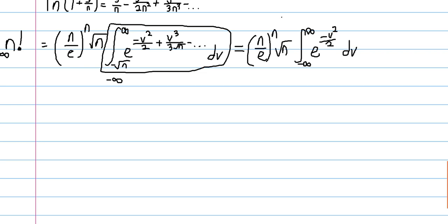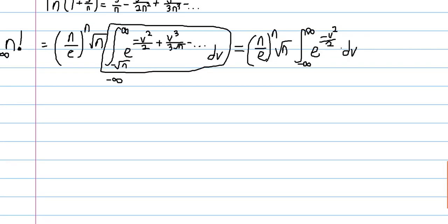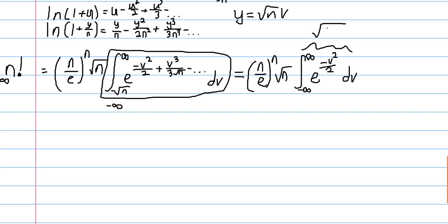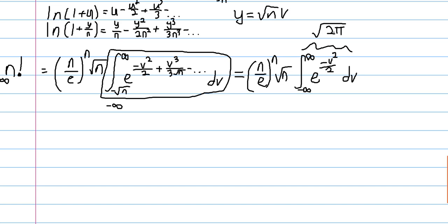And so, disregarding all the constant stuff, we get this integral, which is now independent of n. And we see this highly resembles the Gaussian integral. And if you do a little substitution, you will get that this integral portion is equal to the square root of 2 pi. You just do v is equal to the square root of 2 times t. And plugging that in, you would get your result.